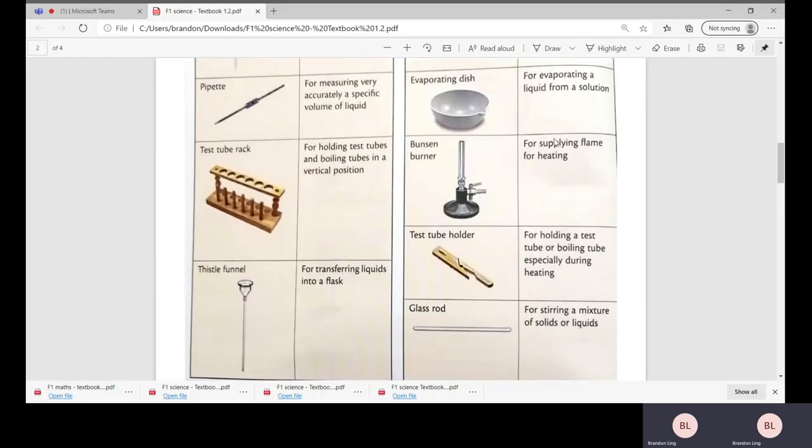Next we have the pipette for measuring very accurately a specific volume of liquid. Evaporating dish for evaporating a liquid from a solution. Next we have the test tube rack for holding test tubes and boiling tubes in a vertical position. Usually after the end of our experiment, we can actually put the test tube on this test tube rack.